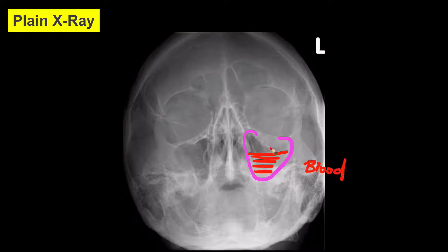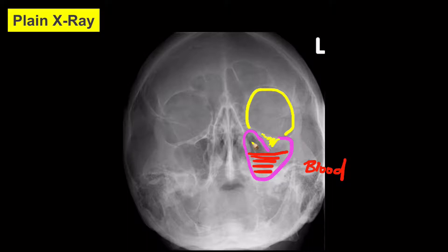The blood has pooled there because there is a fracture through the floor of the orbit. There is also a soft tissue shadow here that could represent the inferior rectus muscle herniating. Plain film radiograph is a limited assessment method, and more commonly we use a CT scan to assess for all facial injuries.